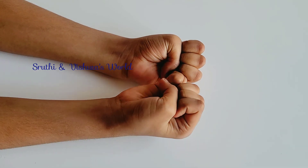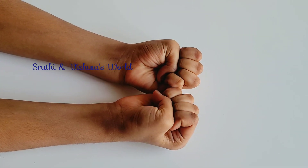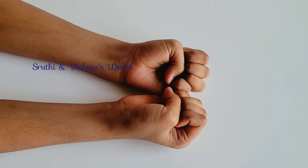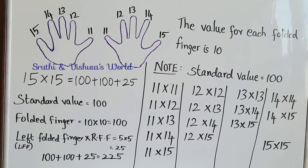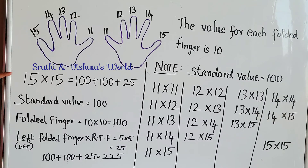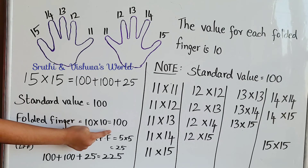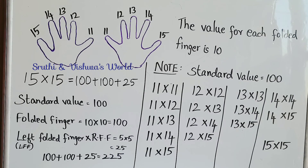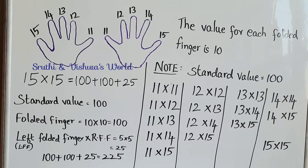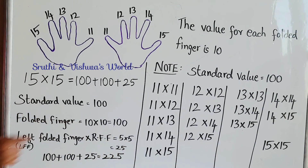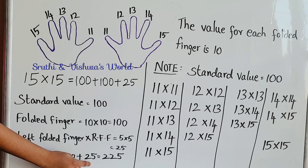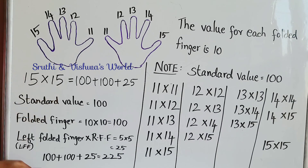There are 5 folded fingers on the right hand and the same on the left, so 5 times 5 is 25. So 200 plus 25 gives us 225. To summarize: for 15 times 15, the initial standard value is 100. We folded all 10 fingers, and since each folded finger is worth 10, that's 10 times 10 which is 100. Then we multiply the 5 left-hand folded fingers by the 5 right-hand folded fingers: 5 times 5 is 25. So 100 plus 100 plus 25 equals 225. So 15 times 15 is 225.